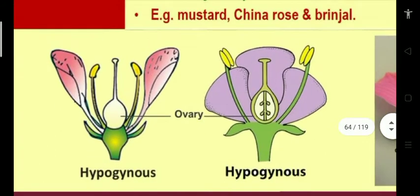So the ovary is at the top, and we call it a hypogynous flower with a superior ovary. Examples: mustard, China rose, brinjal.